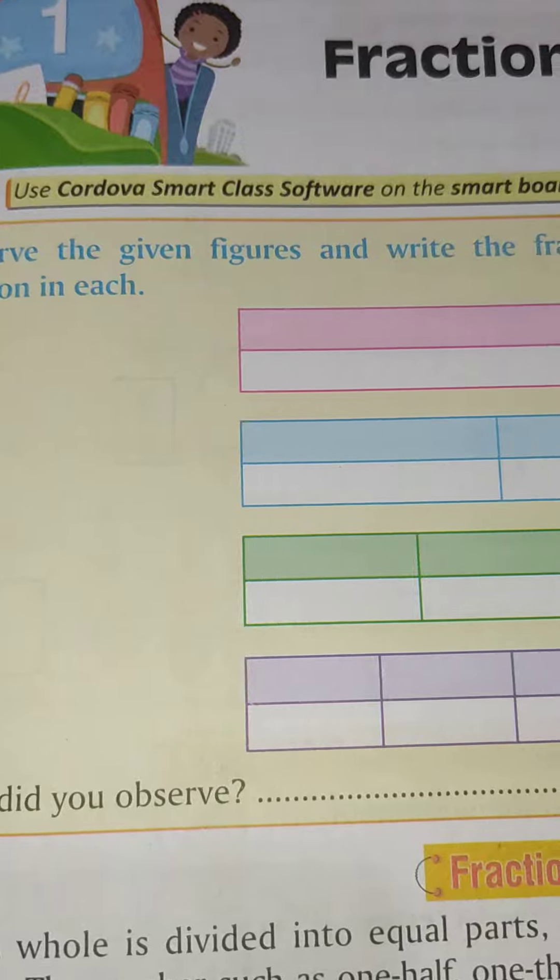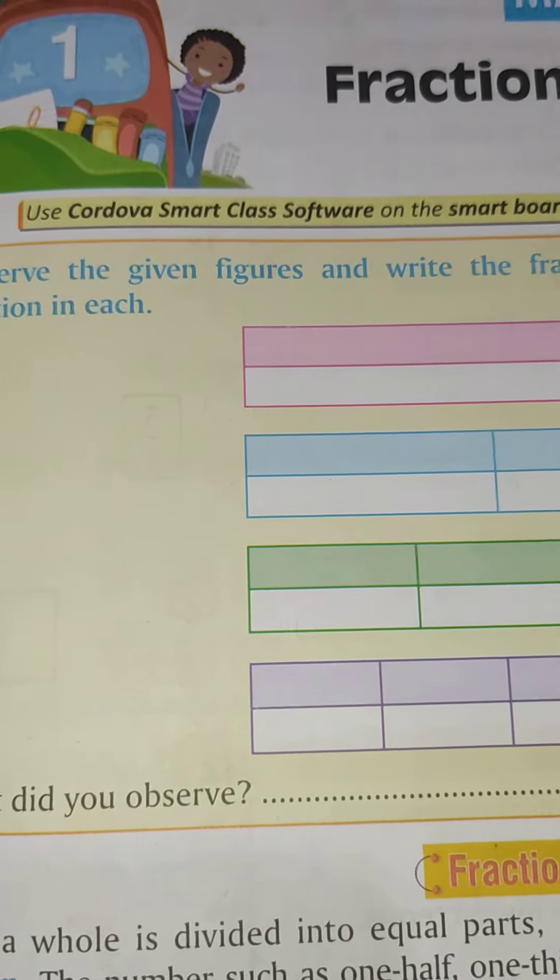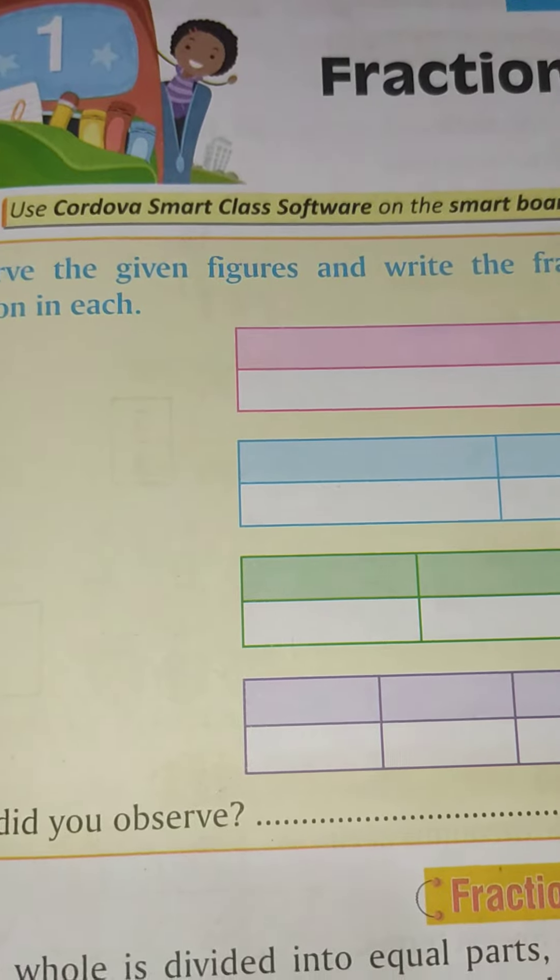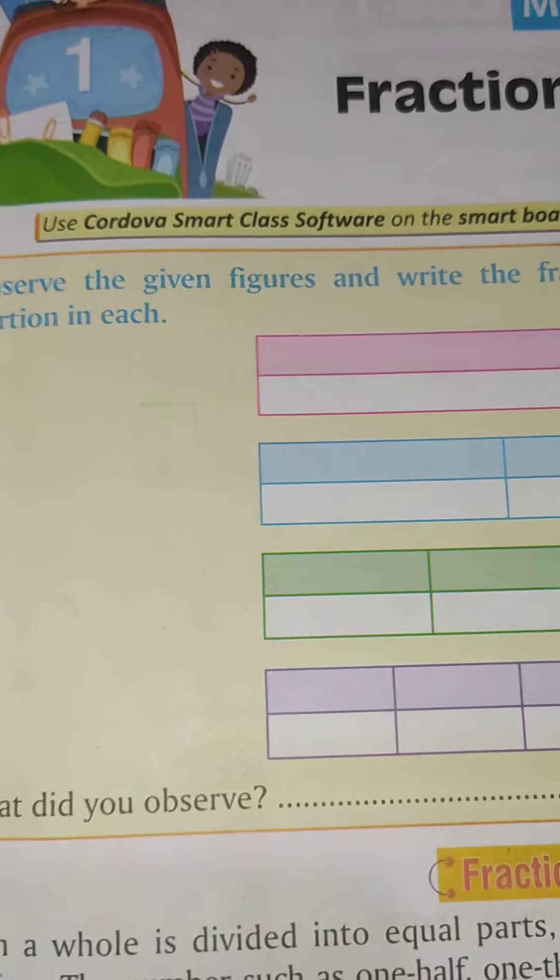For example, when we divide one apple into four pieces, one piece will be a part of a whole, that is one upon four.